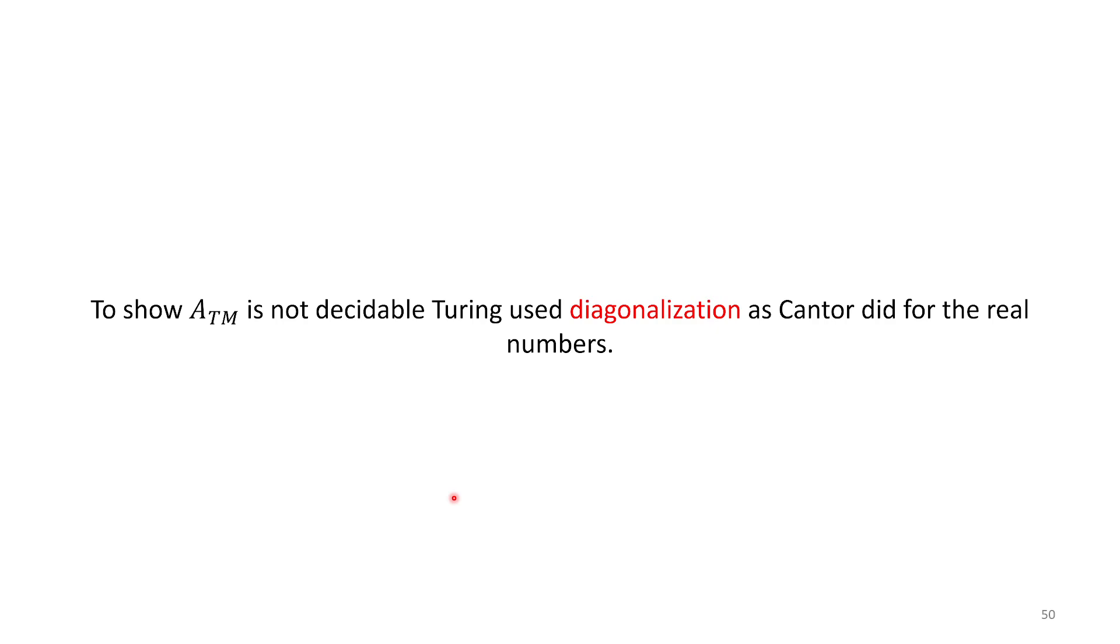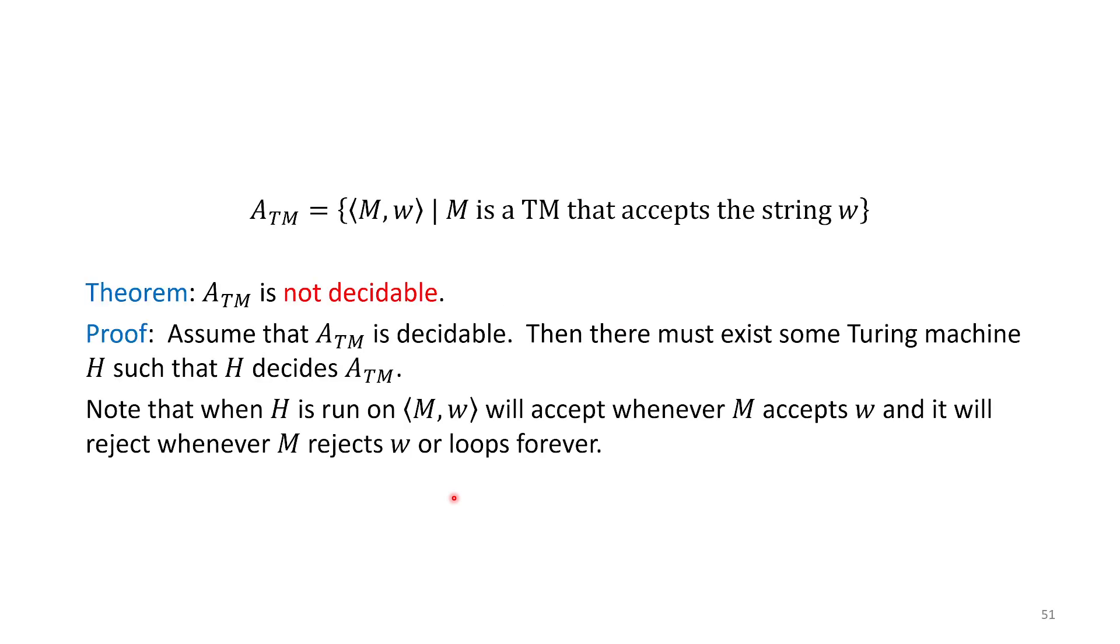There are a couple other proofs using this diagonalization technique that overlap in their conceptualizations. Turing borrowed these techniques from Cantor and Gödel to show a similar result in the realm of computation. Let's follow his proof.